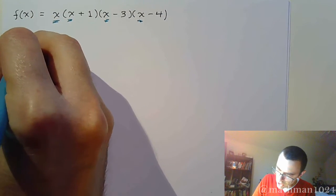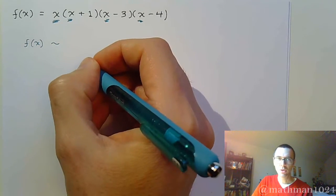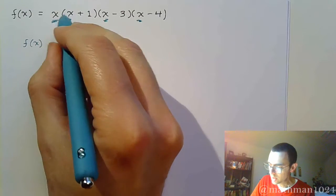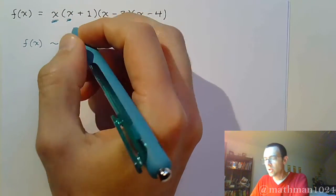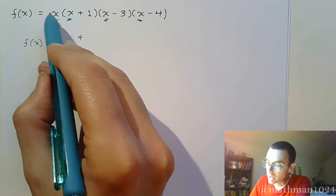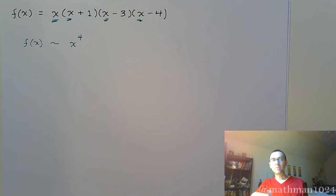that means that my function is going to be similar to x. Now, how many factors of x do we have here? We have one, two, three, we have four factors of x. Notice that you don't have any other numbers connected to the x. You don't have a coefficient here or anywhere else. So that means if you were to expand this polynomial, he's going to be x to the fourth and some other stuff.